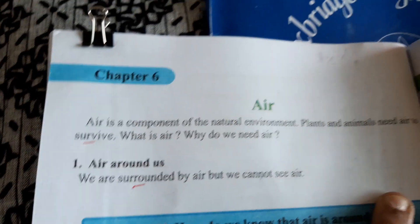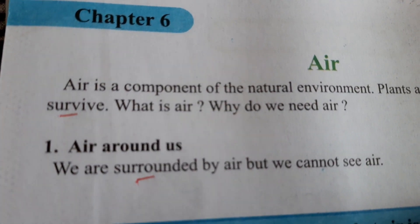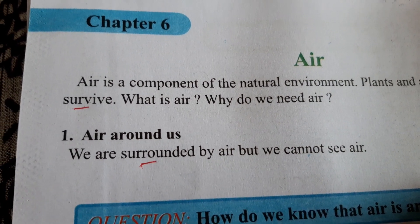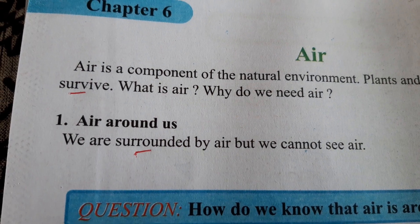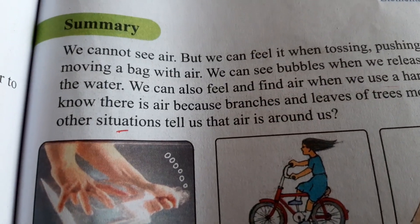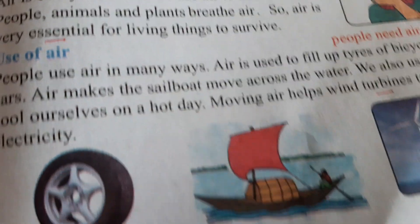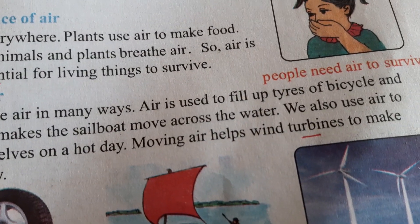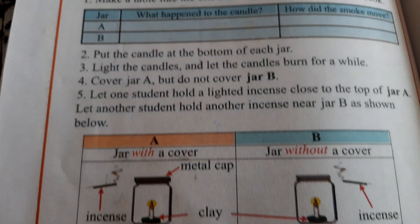Plants and animals need air to survive. What is air? Why do we need air? This is how you have to read it. When you see the underlined words, I am reading the words which you have to memorize. Once I read them, note them in your copy: 'survive', 'air around us', 'surrounded'. From the summary section: 'situation', 'essential', and from the use of air section: 'wind turbines' - I am giving you the accurate pronunciation - and then 'incense burning'.